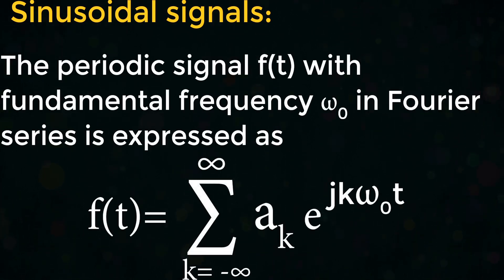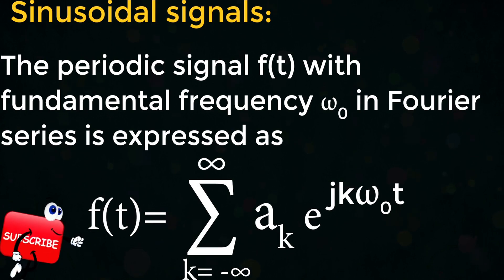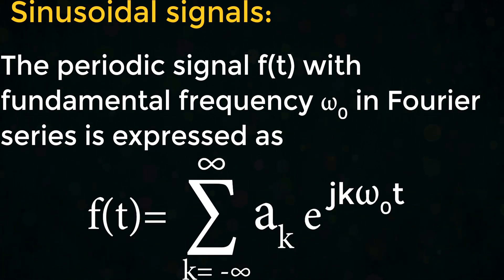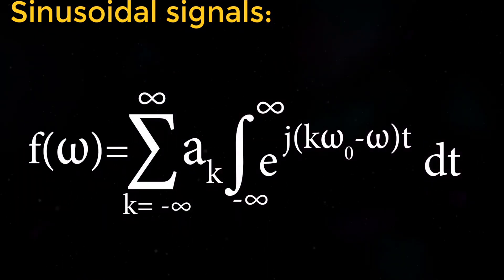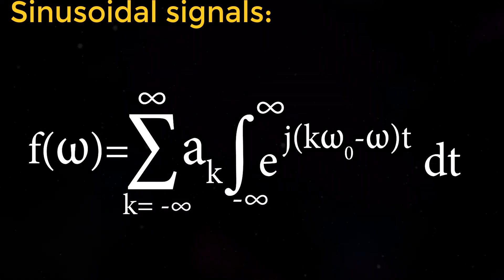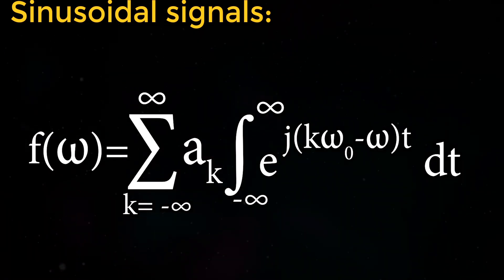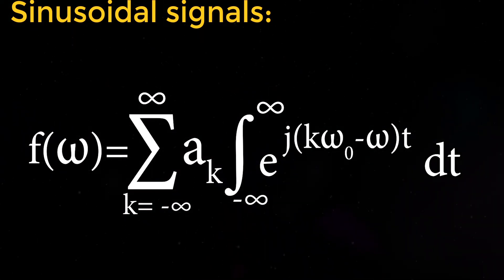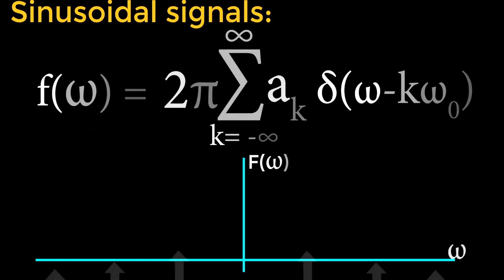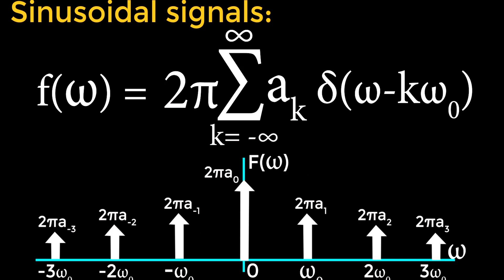For a periodic signal f(t) with fundamental frequency ω₀, expressed in Fourier series as f(t) = Σ_{k=−∞}^{∞} aₖ · e^{jkω₀t}, the Fourier transform is F(ω) = Σ_{k=−∞}^{∞} aₖ · ∫_{-∞}^{∞} e^{j(kω₀−ω)t} dt, which gives F(ω) = 2π · Σ_{k=−∞}^{∞} aₖ · δ(ω − kω₀).